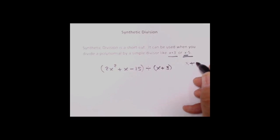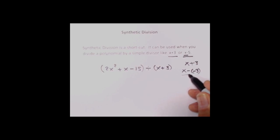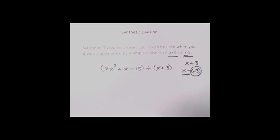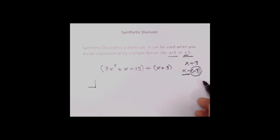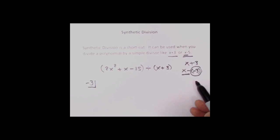The x plus 3 has to be split up so that we take the plus and split it into two minuses. Now it's true that minus times minus combines to plus, so this is really x plus 3. But why we did this was to get the required x minus, and that means the number we're going to use out in front for our synthetic division has to be negative 3.